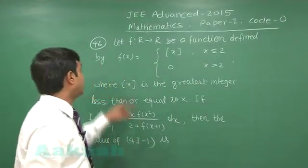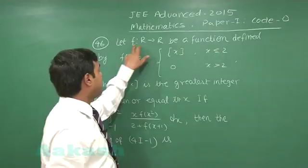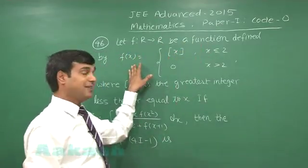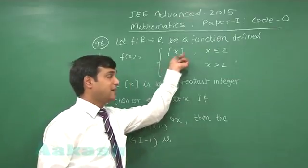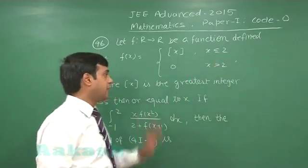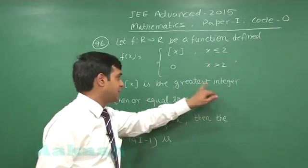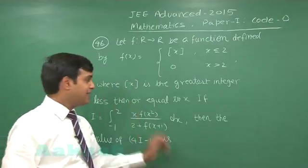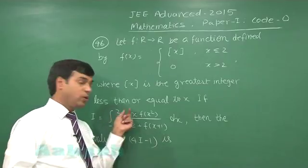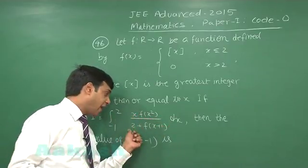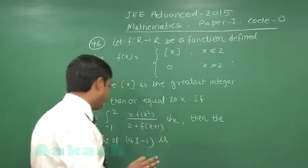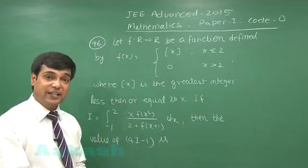Let us take question number 46. Let f from ℝ to ℝ be a function defined by f(x) equals greatest integer of x whenever x ≤ 2, and 0 whenever x > 2, where greatest integer x is the greatest integer less than or equal to x. If I equals the integral from -1 to 2 of x·f(x²/2 + f(x+1)) dx, then find the value of 4I - 1.